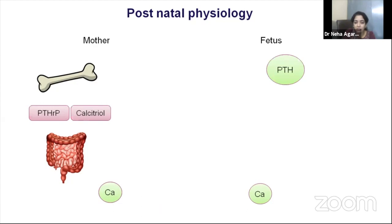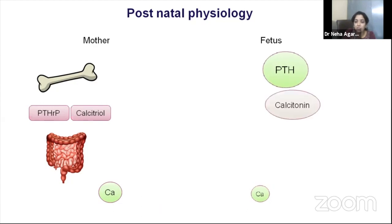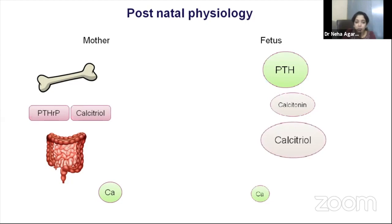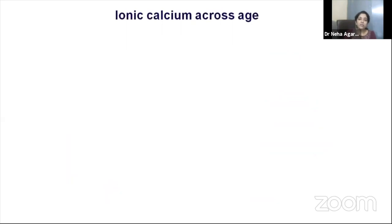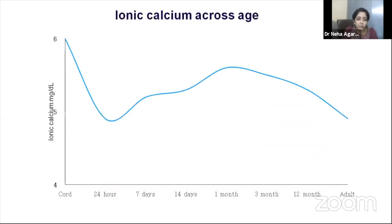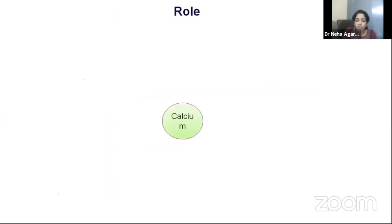The first response to decreased fetal calcium after birth is an increase in parathormone secretion, followed by a decrease in calcitonin and then an increase in calcitriol. Vitamin D-dependent calcium disorders in the fetus and newborn are rare and present as late hypocalcemia beyond three weeks of life. This fetal physiology causes a physiologic dip in ionic calcium, more pronounced in preterm neonates who missed the third trimester calcium accrual phase.